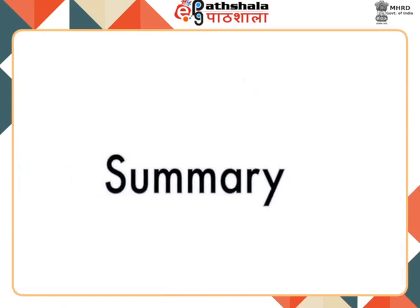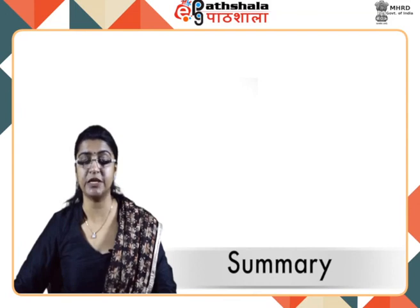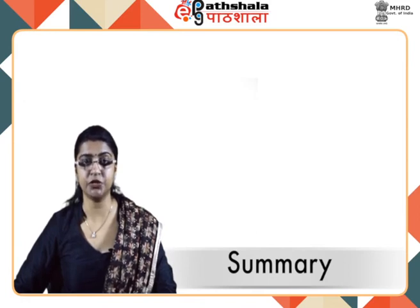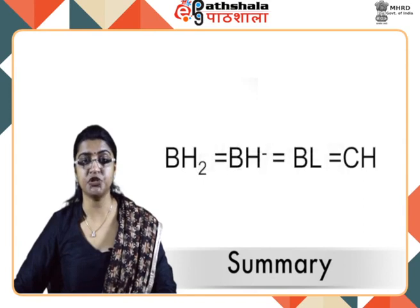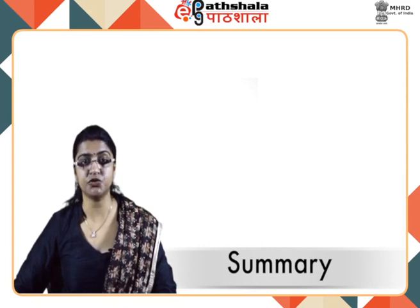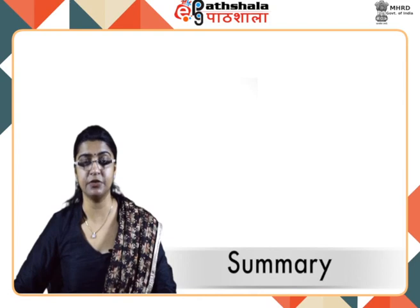In summary, we have learned that carboranes are compounds with the basic structural unit containing carbon and boron atoms arranged on the vertices of a triangular polyhedron. The structures of carboranes are closely related to those of isoelectronic boranes, wherein BH is equivalent to B- or C, and BH2 is equivalent to BH- or CH. The structure of carboranes can be predicted using Wade-Mingos rules. Carbon and boron atoms in closo structures are numbered such that the top vertex is given number 1 and the remaining vertices are numbered in a clockwise direction.